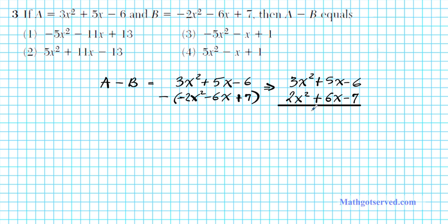Remember, subtraction is the same thing as adding the opposite. We already found the opposite of b, so we can just add these downwards. We have 5x squared plus 11x minus 13. When combining terms, if the signs are the same you add and keep the sign; if the signs are different, you subtract and keep the sign of the bigger. We can see that our answer to number 3 is option number 2.